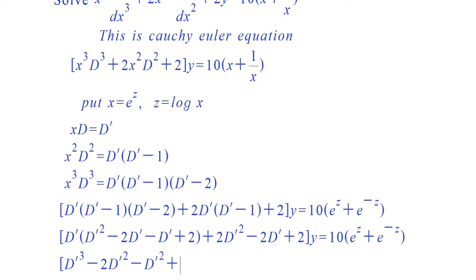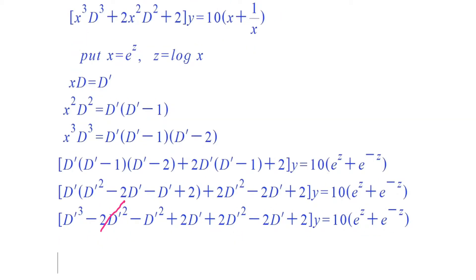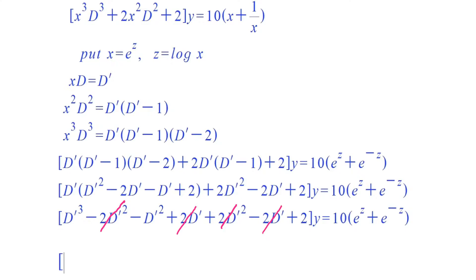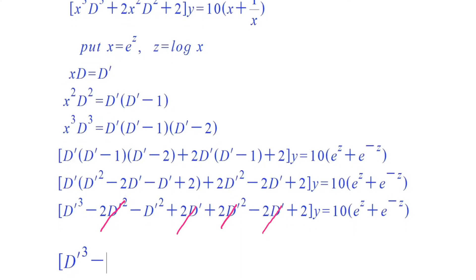After collecting like terms, the simplified equation is D'³ − D'² + 2 into y equals 10(e raised to z plus e raised to minus z).